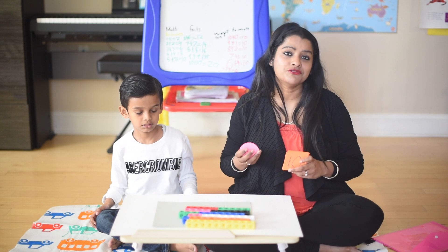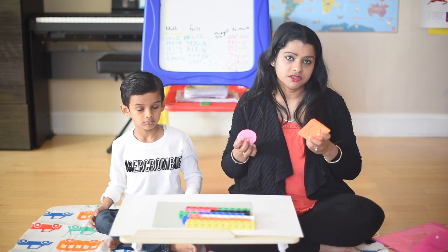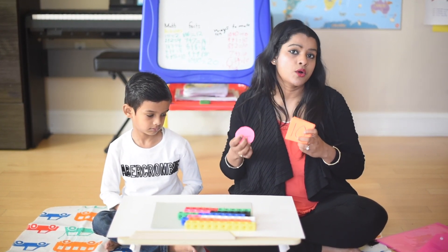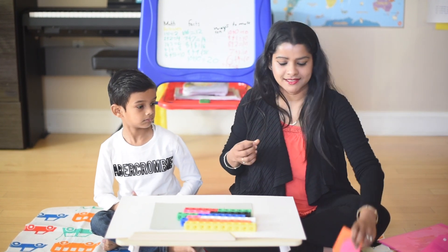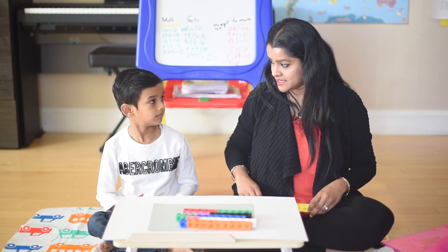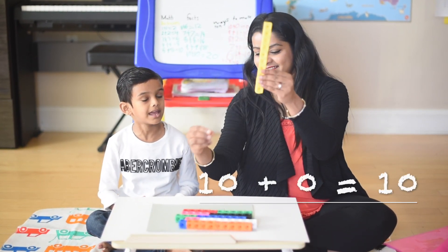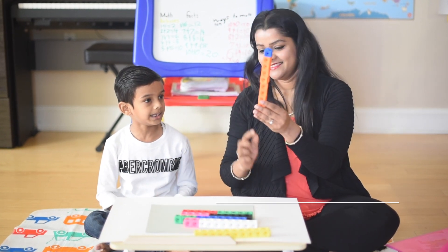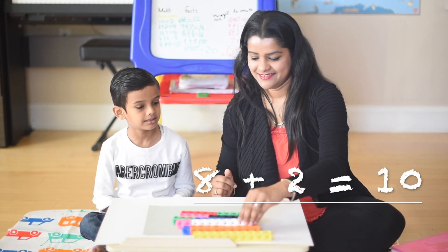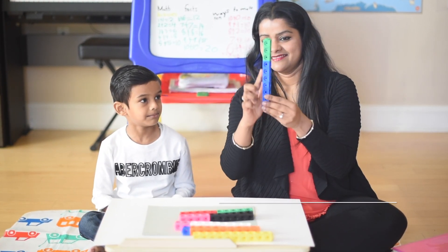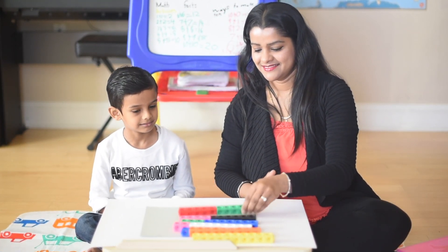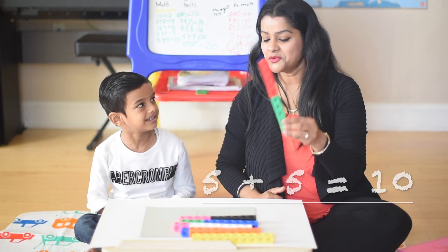The next math fact to know thoroughly is the number bond of ten. We have covered the number bond of ten and other numbers in the video called Number Bonds, but let's do a quick and fun review. Can you tell me various ways to make ten? Ten plus zero equals ten. Nine plus one equals ten. Eight plus two equals ten. Seven plus three equals ten. Six plus four equals ten. And five plus five equals ten. Great job!